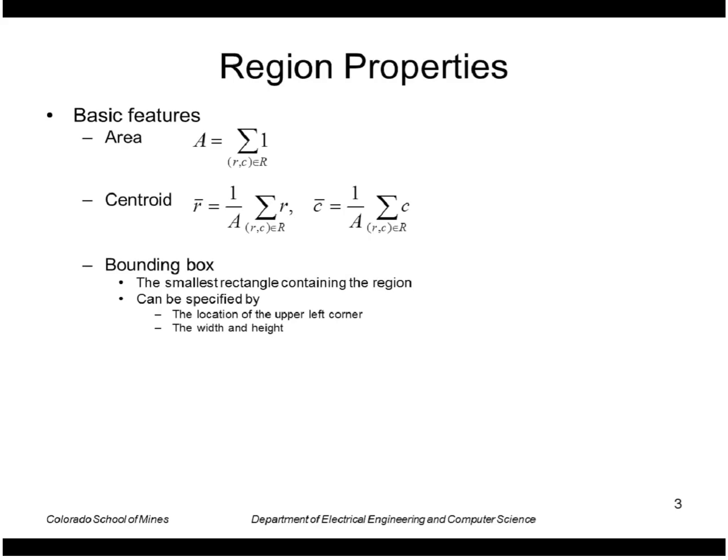First we're just going to look at some basic features. Later in the course we'll look at more complicated features but just look at area and centroid which are defined as you can see here. Area of course is just the total number of pixels in the region.